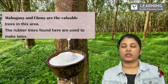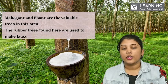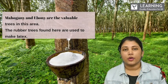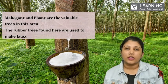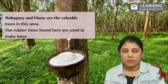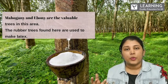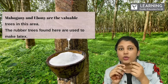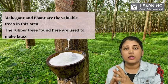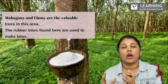Mahogany, Gaini, and Ebony are valuable trees in this area. Rubber trees found here are used for latex. We get rubber from this tree — erasers are made from it, as well as plastic-like substances. The substance we get from the rubber tree is called latex. You can see white milk-like fluid coming out from the rubber tree, similar to what comes out when you break mango tree leaves. From latex, we can make rubber. This rubber tree is found in this equatorial region.